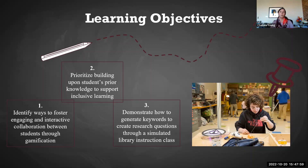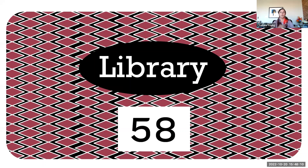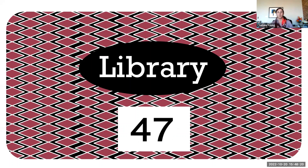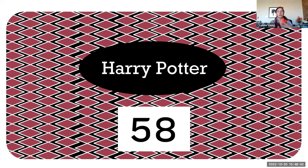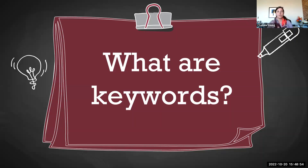This is where we get into more of the activity portion, where students have something to do to help them practice. One example is we throw a word up on the screen and have students come up with keywords about it. If the word is 'library,' how would you describe it? Books, computers, a building — different things like that. We do different words to get students talking and get the class engaged. We'll do library, Harry Potter, and others — we can cater these to the class. Sometimes these get really energetic and fun.